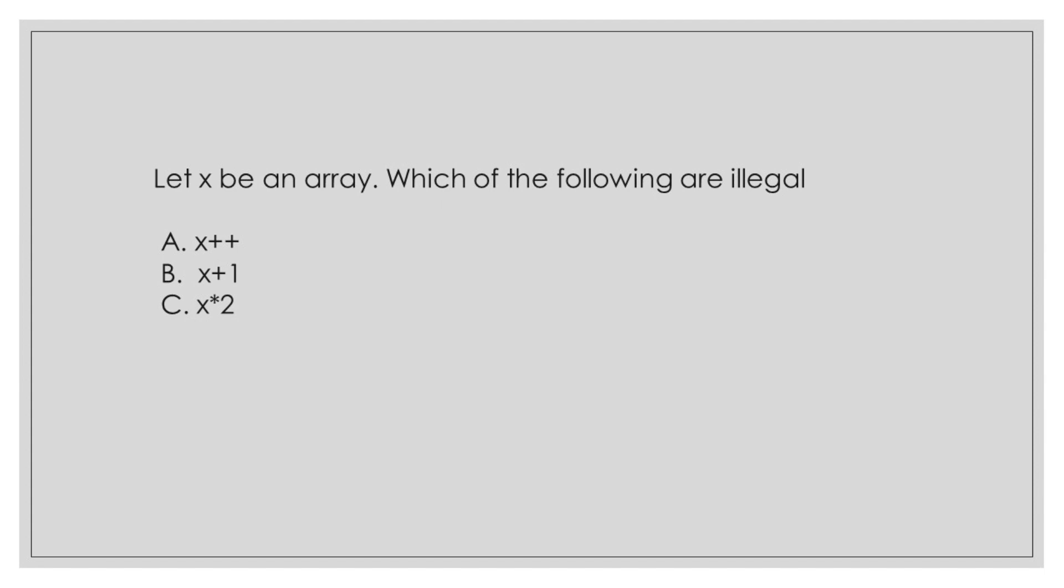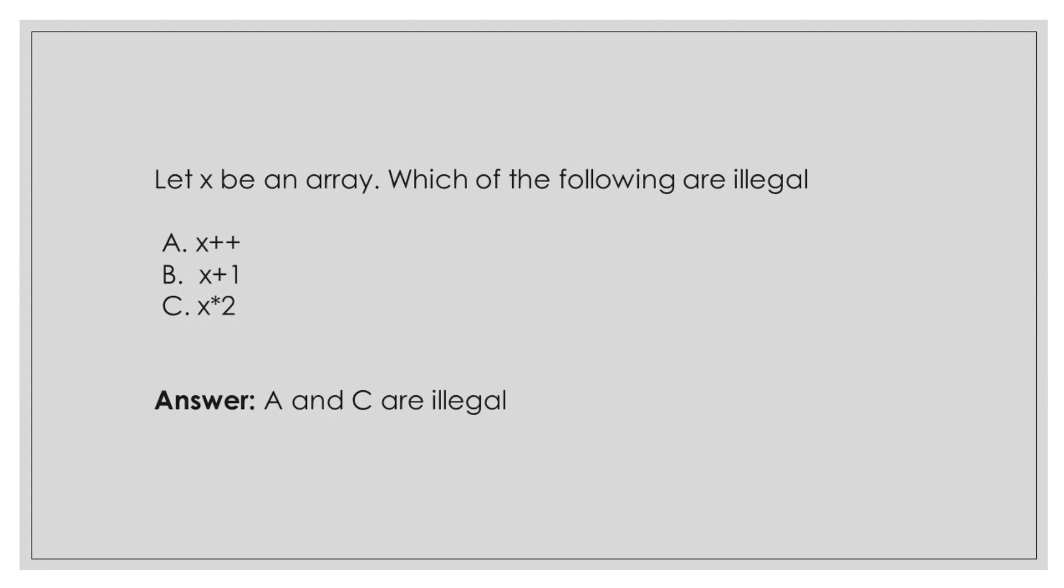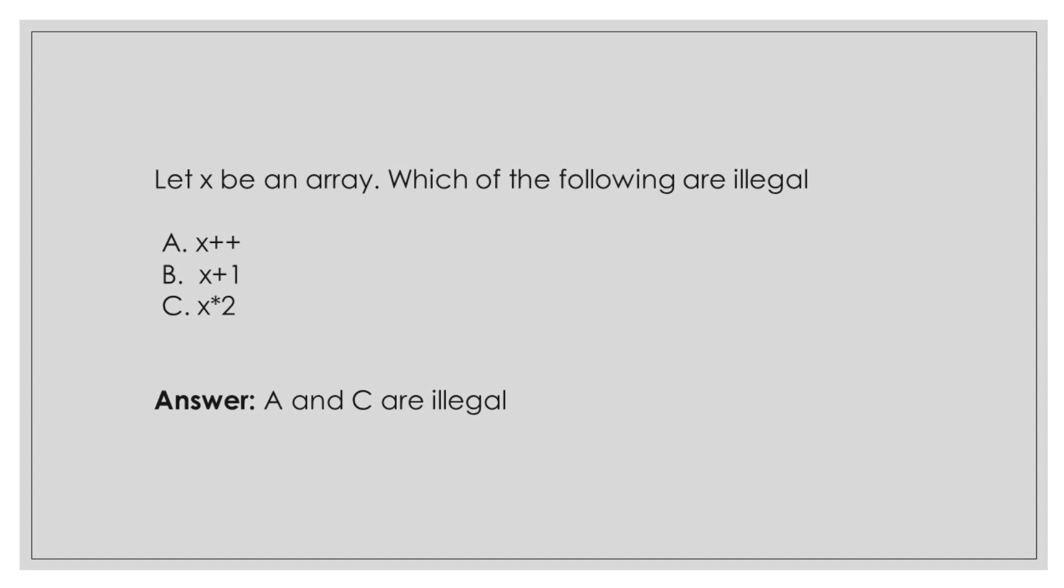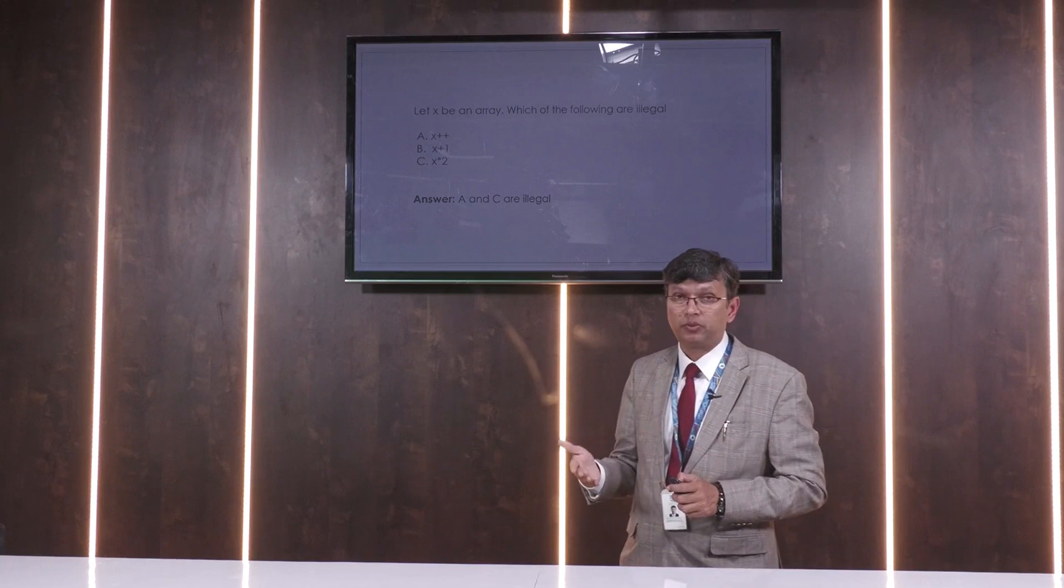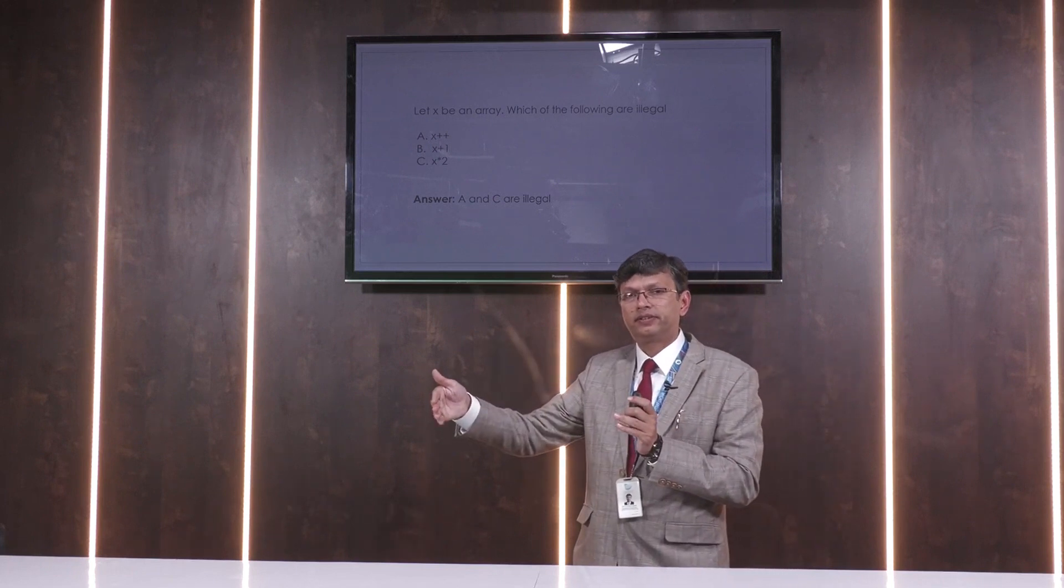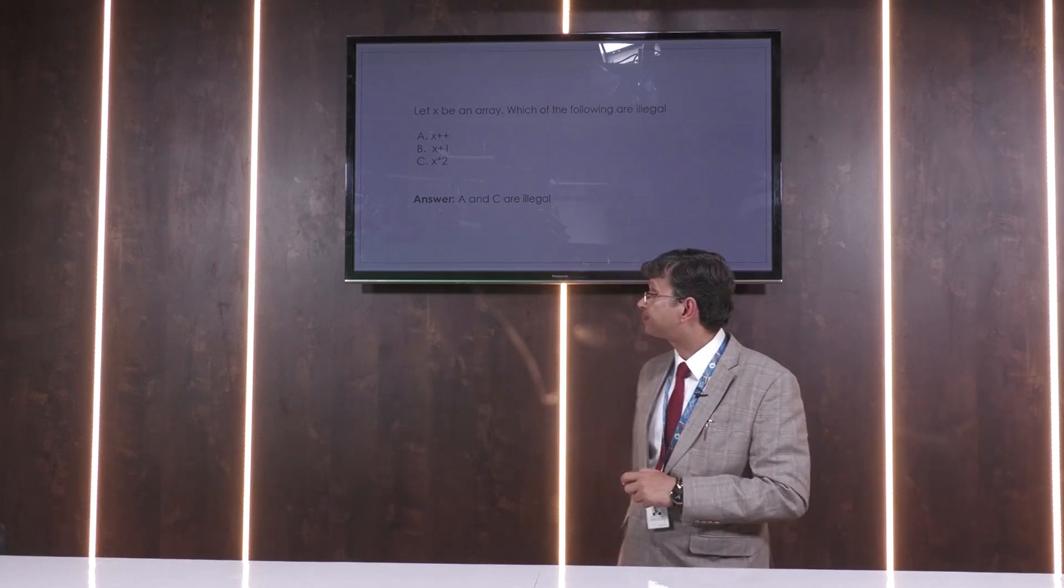Let x be an array. Which of the following are illegal? Number 1: x plus plus. Number 2: x plus 1. And number 3: x multiplied by 2. Here we can see the answer is A and C are illegal. Because it is a pointer, it's an address. Array is an address. We cannot have all these equations like x plus plus or x multiplied by 2. But we can have x plus 1. That means shift to the next address. Shift to the next address and so on.